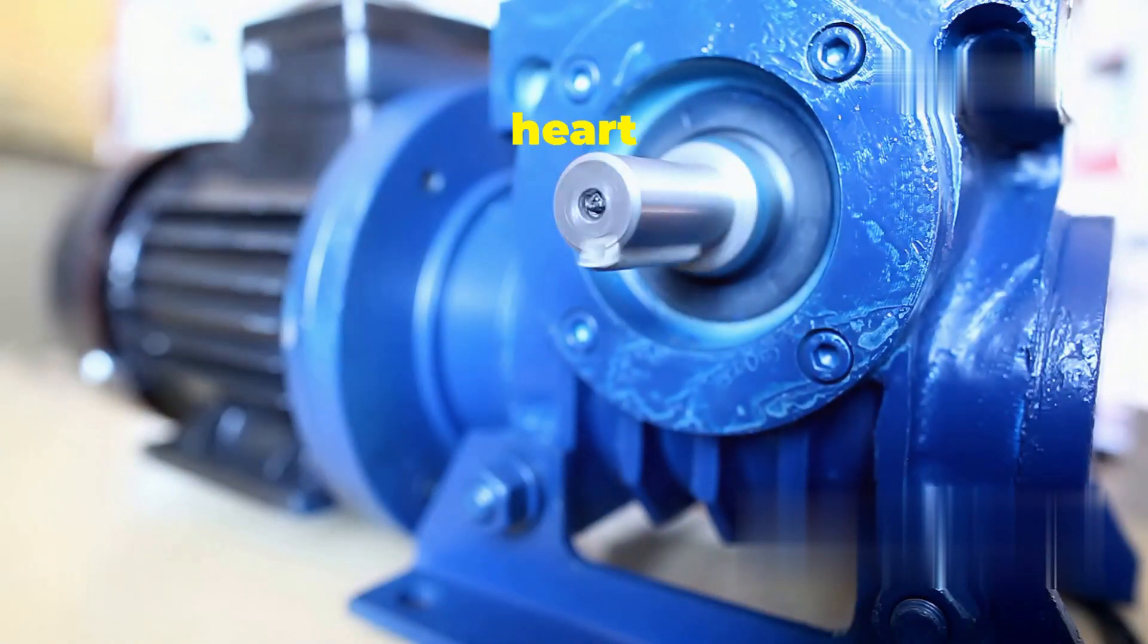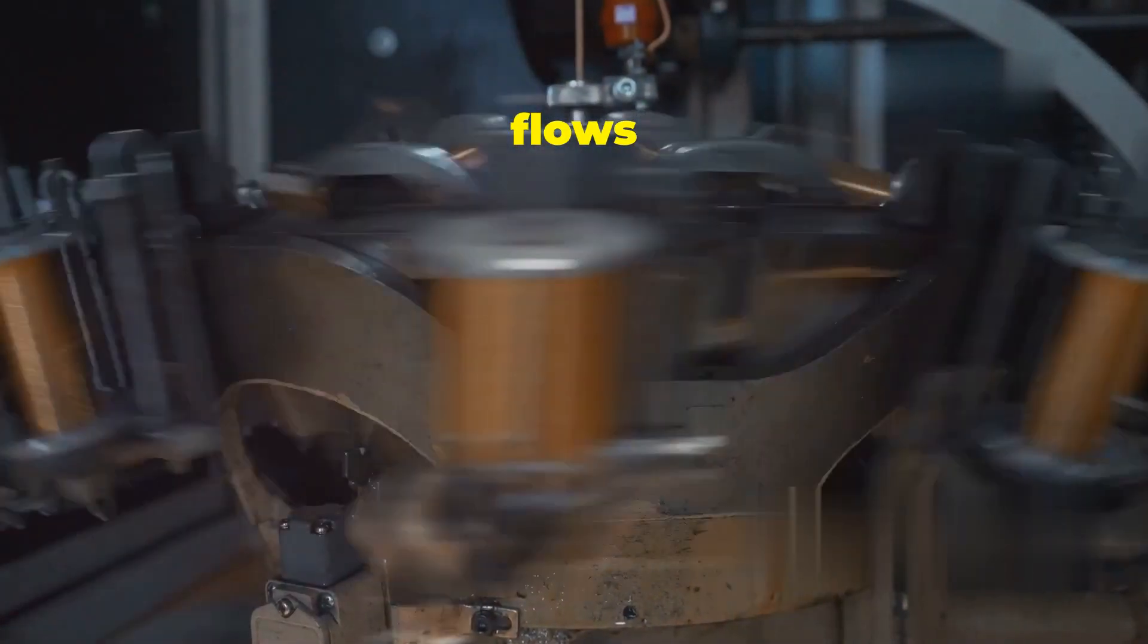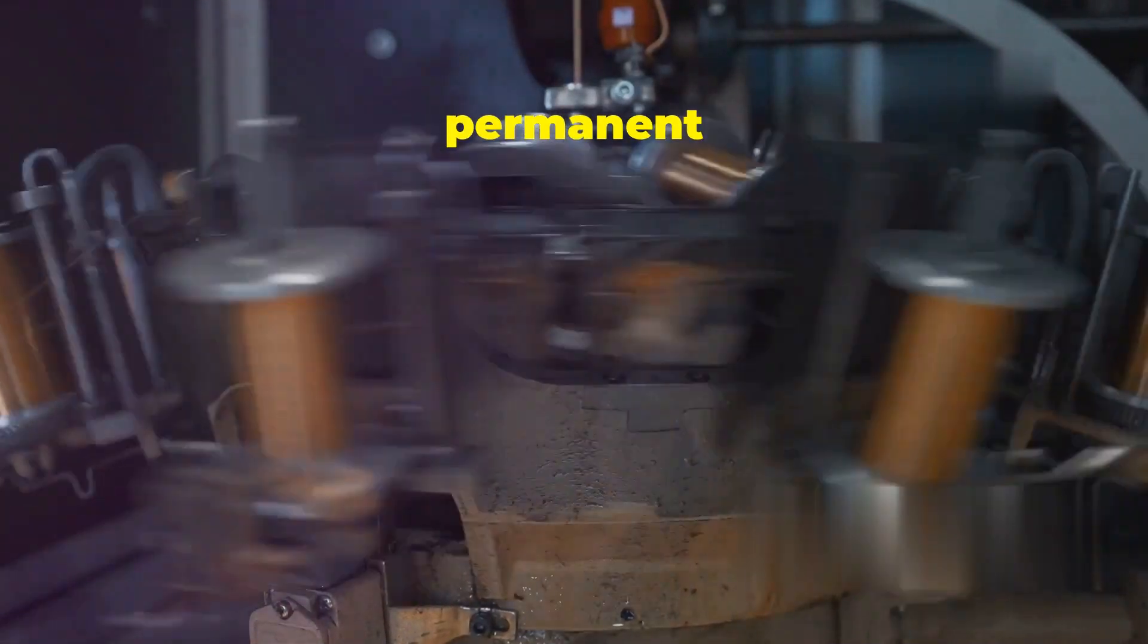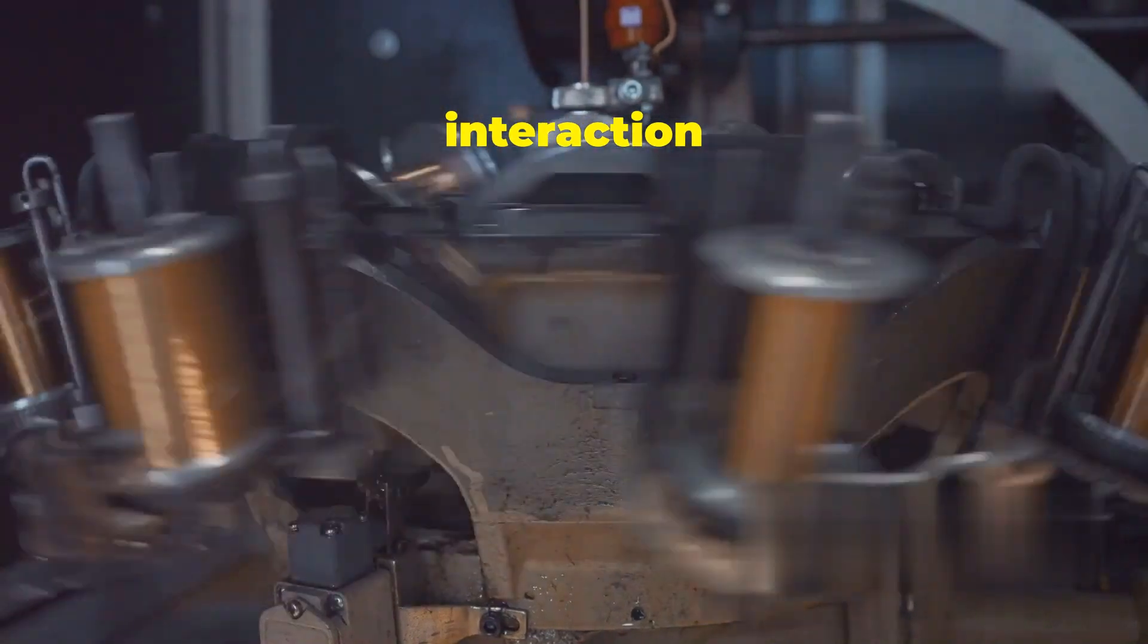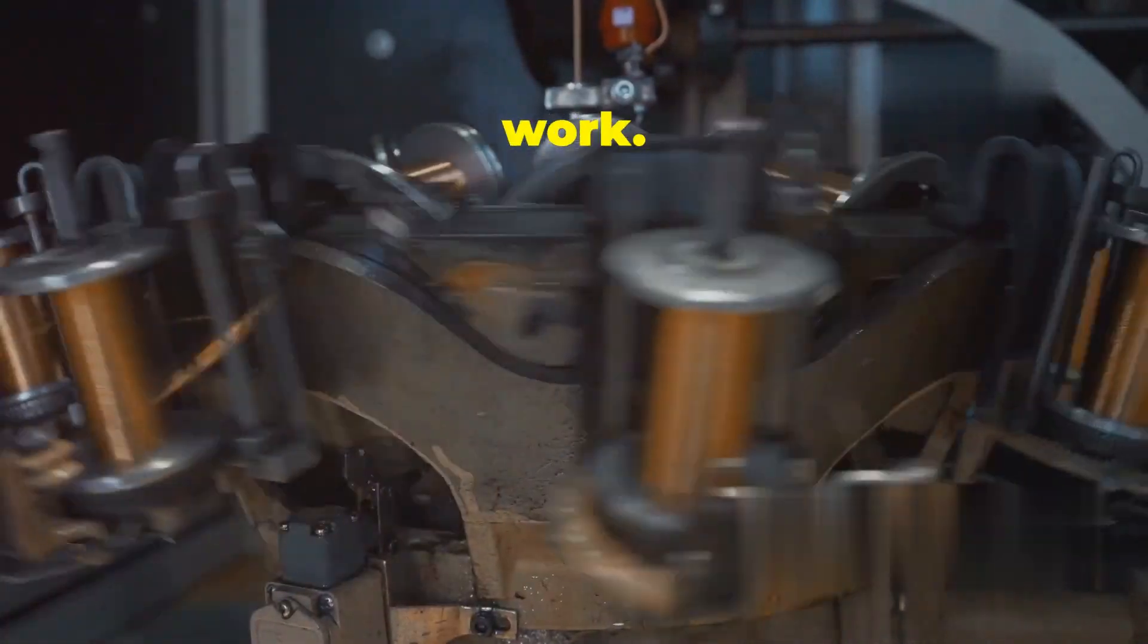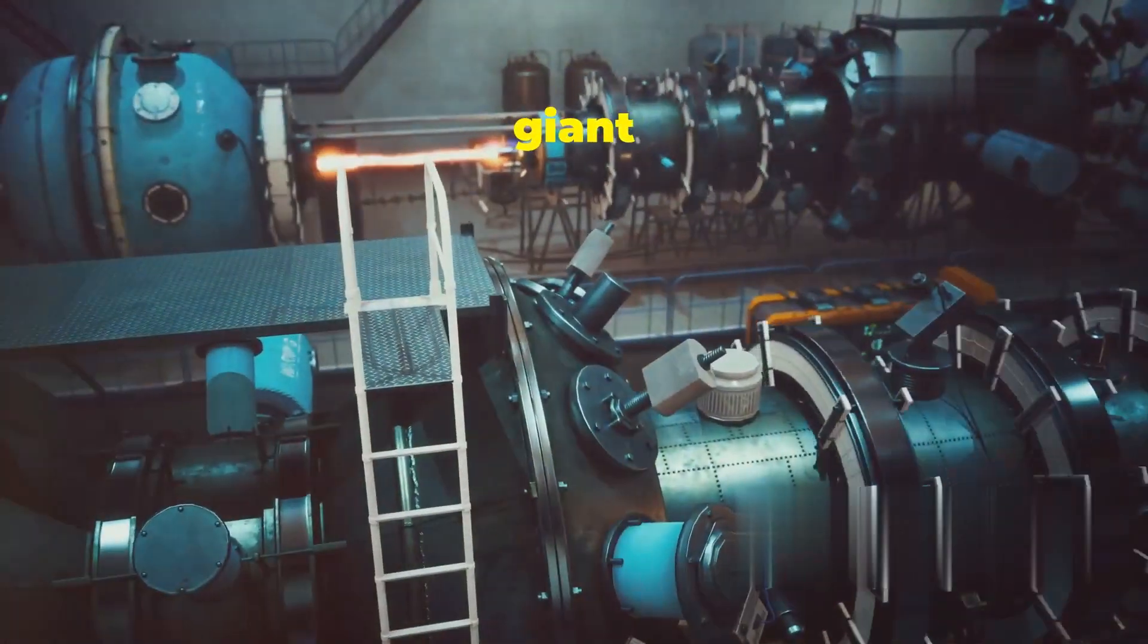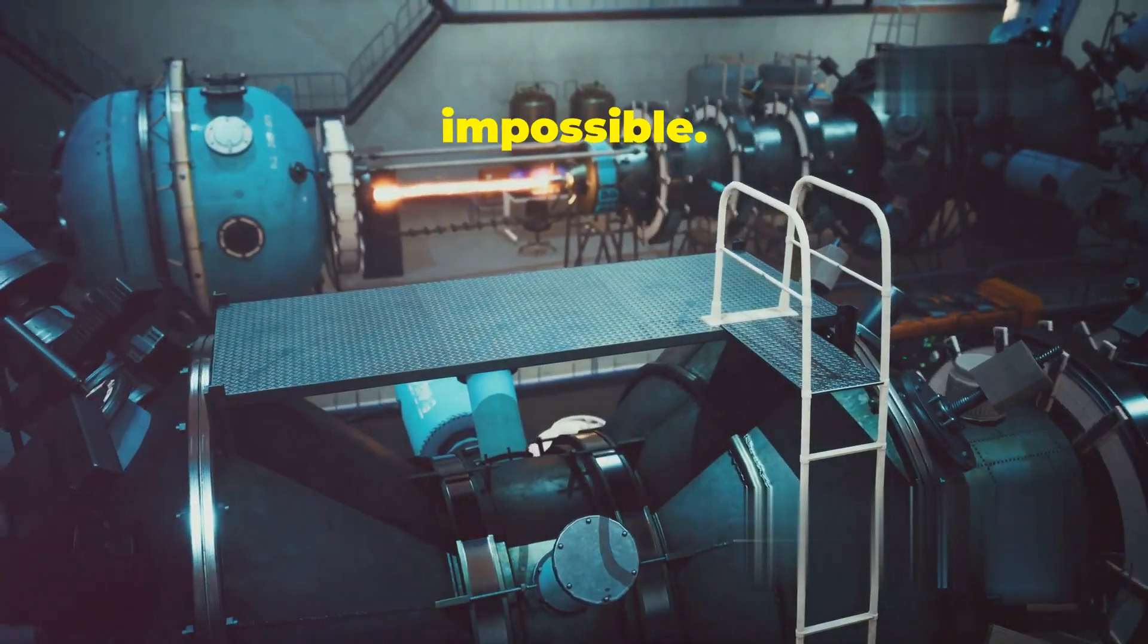Electric motors: At the heart of every electric motor lies an electromagnet. These motors are essential components in a wide range of devices, from household appliances to industrial machinery. When an electric current flows through the motor's coils, they generate a magnetic field that interacts with permanent magnets, creating rotational force. This interaction is what drives the motor and enables it to perform work. This principle powers everything from tiny motors in our smartphones to giant industrial machines. Without electromagnets, many of the conveniences of modern life would be impossible.